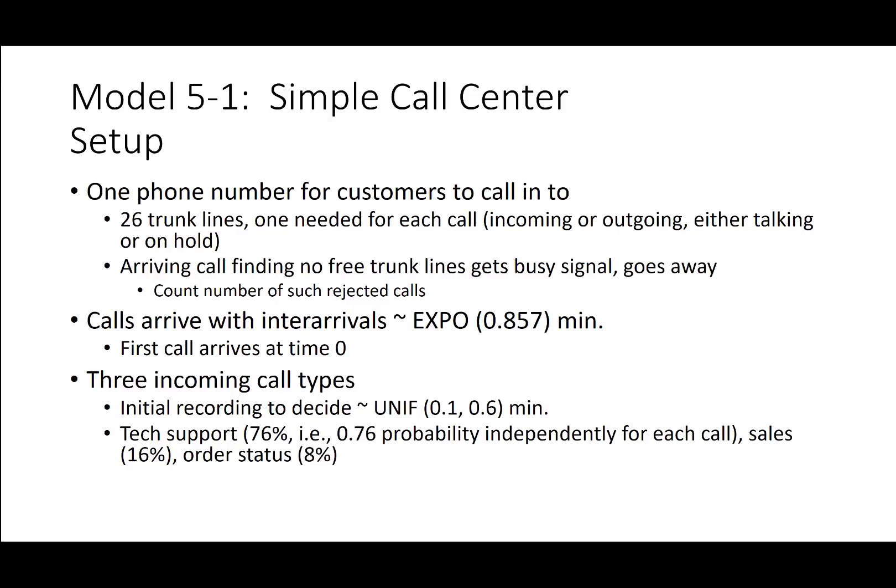Starting with Model 5.1, the simple call center. The setup will include one phone number for customers to call into, with 26 different trunk lines where one line will be needed for each call. Regardless of whether the call is incoming or outgoing, or whether somebody is talking or on hold, the line cannot be used for two calls at the same time. An arriving call finding no free trunk lines gets a busy signal and goes away, so we want to count the number of such rejected calls.